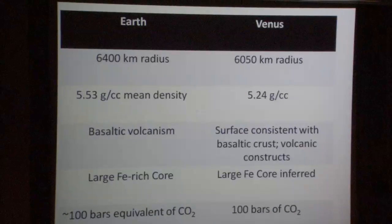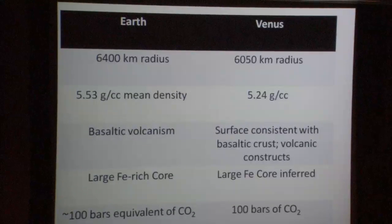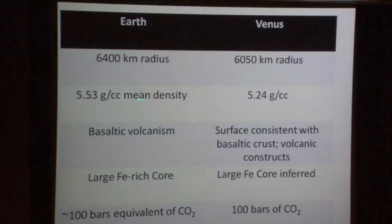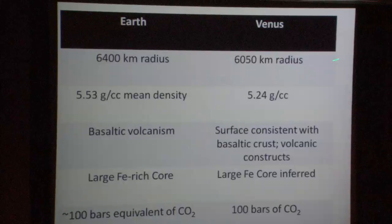These two bodies have very similar radius and mean density. When you account for the 20% lower central pressure of Venus, the difference in mean densities is mostly, if not entirely, accounted for by the effect of pressure. If you make a model of Venus assuming the same basic composition as Earth, you get within error bar the right answer. There is no reason to suppose the bulk composition of Venus is significantly different from Earth.